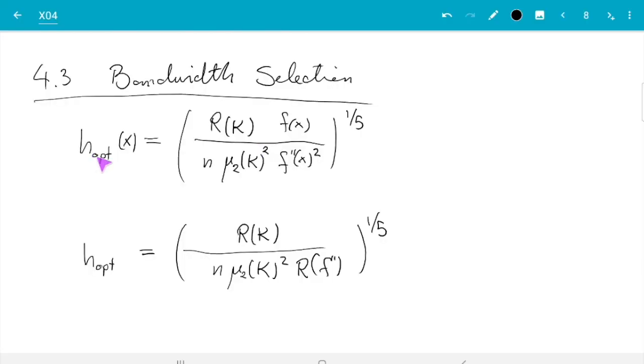Let's discuss rules of thumb. I have written down the formulas for the optimal bandwidth as far as the mean squared error is concerned from section 3, where we learned about the mean squared error for fixed x that depends on x here.